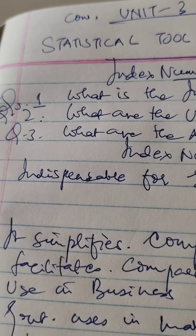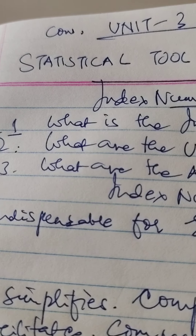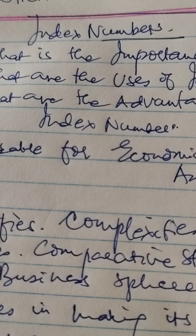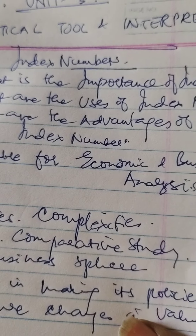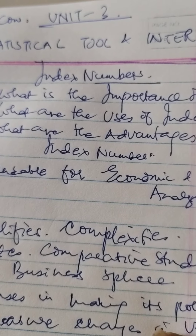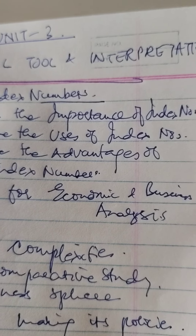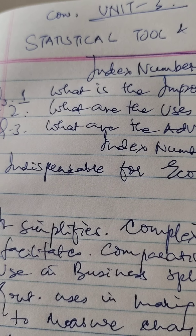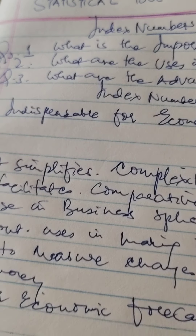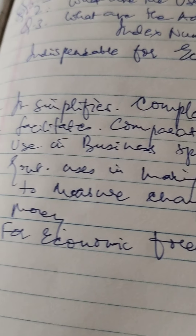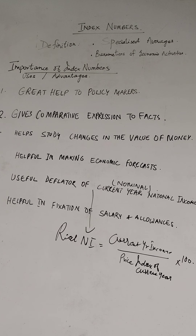This is Unit 3 in continuation — Statistical Tools and Interpretation. You can get questions such as: 'What is the importance of index numbers?', 'What are the uses of index numbers?', or 'What are the advantages of index numbers?' — and the answer is essentially the same for all three. Write the number of points according to the marks allocated: three points for three marks, four for four, and six for six. Please write these points down in your notebooks, make these notes, and I'm sure you'll be able to answer this question.